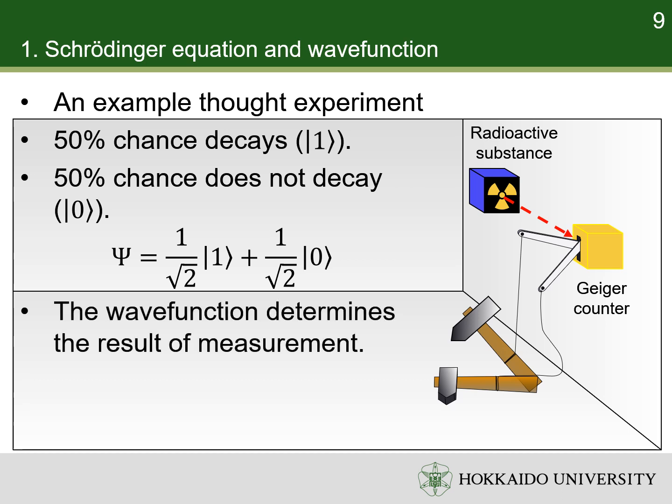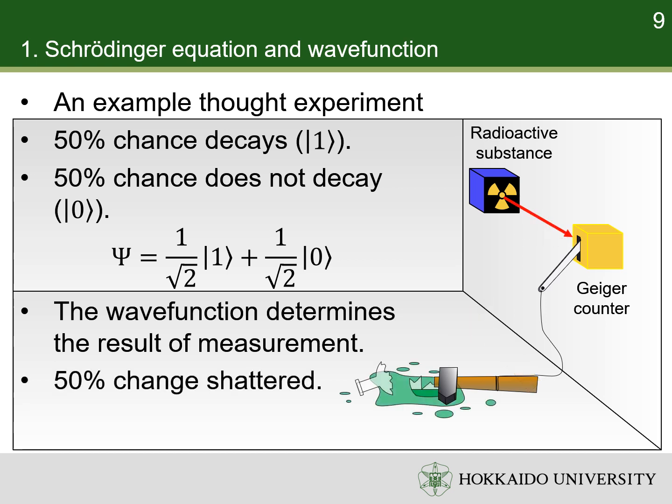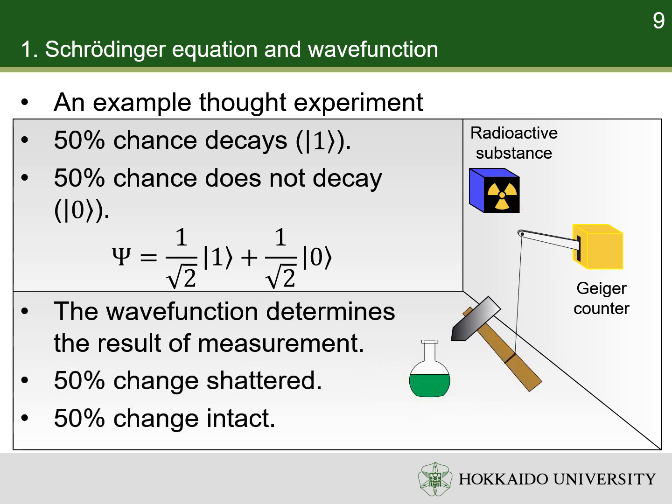In Copenhagen-type views, the wave function reflects our knowledge of the system. It means that there is a 50% chance that the flask is shattered, and 50% chance that it is intact.